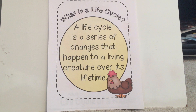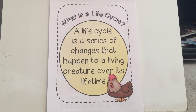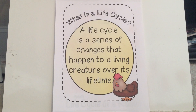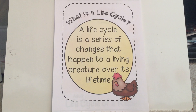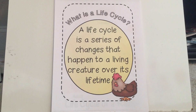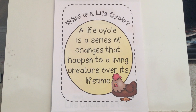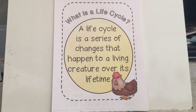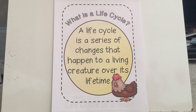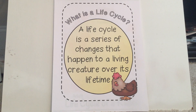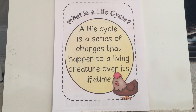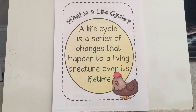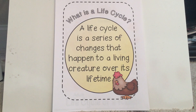Here we are again, second grade, and we're talking about life cycles. We've talked about the things that we can acquire from our parents — those are called inherited traits — and now we're going to talk about the actual life cycle. So what is a life cycle? A life cycle is a series of changes that happen to a living creature over its lifetime.